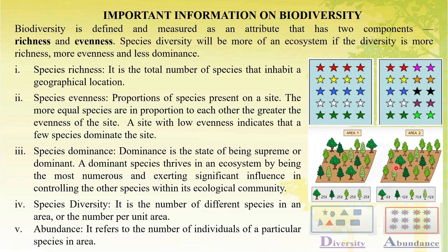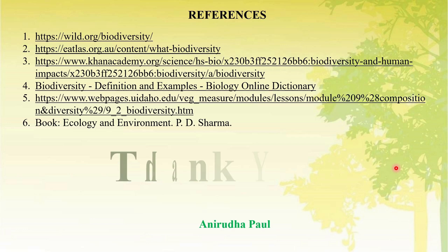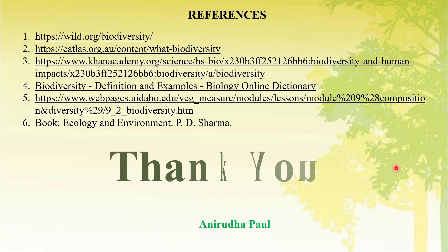Species diversity is the number of species in an area, or number per unit area. Abundance refers to the number of individuals of a particular species in an area. Most of the information is taken from trusted open-source sites, which you can read for further knowledge.